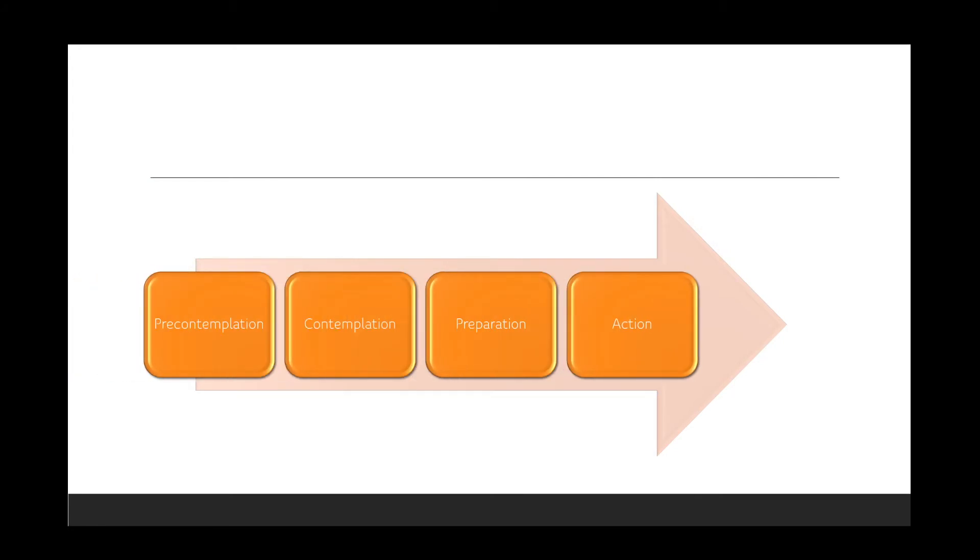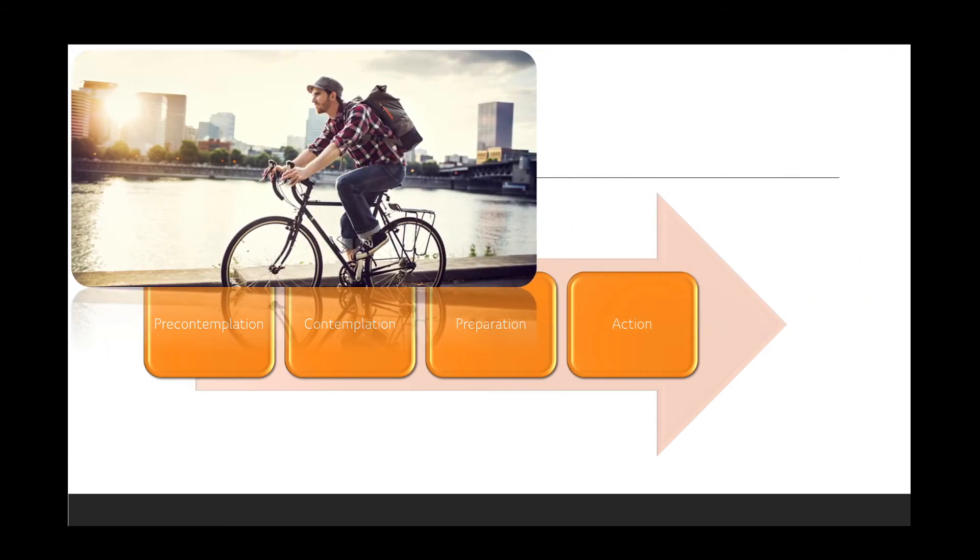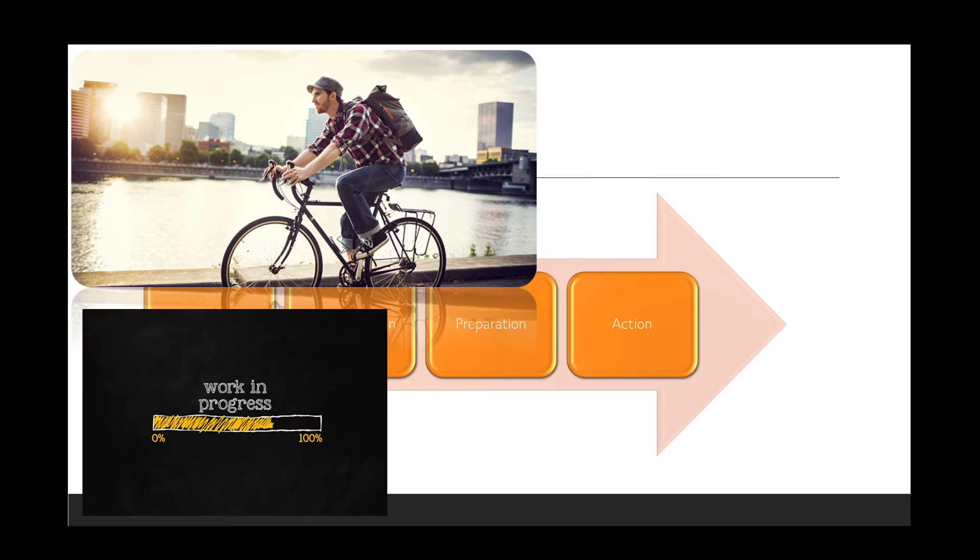Now the action phase is where the behavioral change actually happens. This is where the person starts taking the actions that are the change. This is where the people are now not smoking, are eating healthier, are doing the exercise they planned for and prepared for. The action phase is still tenuous in that the person is still actively choosing to do or not do the behavior. It is still a conscious choice requiring effort.